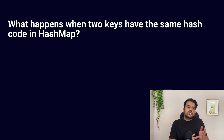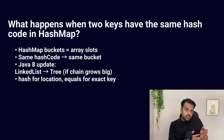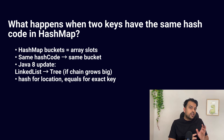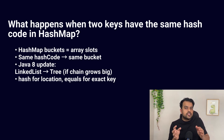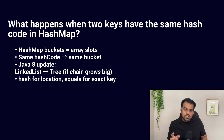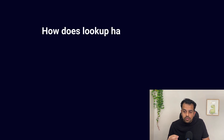The next question: what happens when two keys have the same hash code in HashMap? This is called a hash collision. In HashMap, buckets are stored in an array, and when two keys generate the same hash code they go into the same bucket. Before Java 8, the bucket stored collisions in a linked list. After Java 8, if the bucket list becomes large it converts into a balanced tree for faster search. This is a very important point to mention because it has also been asked in Java 8 feature questions.